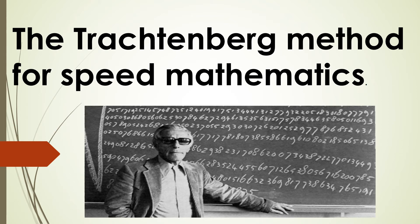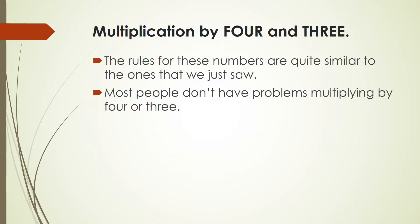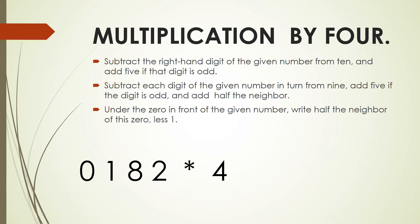Hello and welcome to the Trachtenberg method for speed mathematics. The rules we are going to use for these numbers are quite similar to the ones we just saw. For multiplication by 4, we need to subtract the right-hand digit of the given number from 10, then add 5 if that digit is odd. Next, subtract each digit from 9, add 5 if the digit is odd, and add half of the neighbor. Finally, under the 0 in front of the given number, write half the neighbor minus 1.